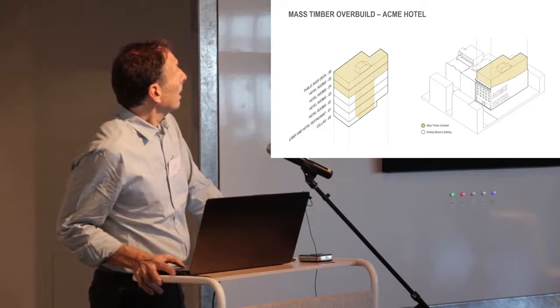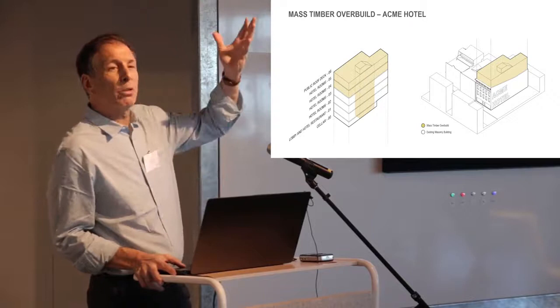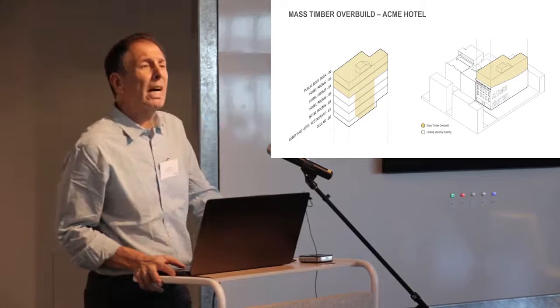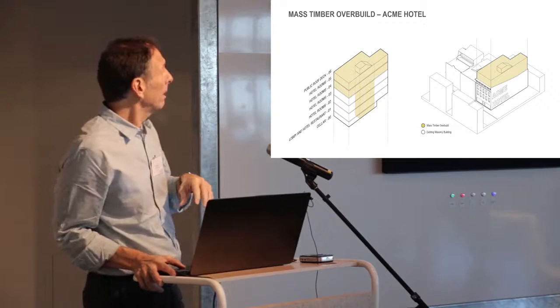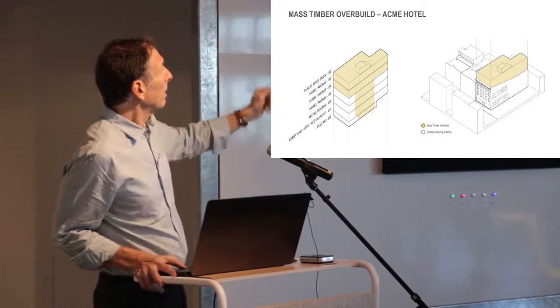Another project, we believe strongly in overbuilds, not demolishing the urban fabric, rather preserve, restore, and then grow timber buildings out of the top of them. So this is a project in New Haven, Connecticut. It's unreinforced masonry, where we're talking about putting two stories on top by bringing a timber stair and elevator core down to a new foundation. But that gives the lateral resistance that it needs to put two floors of timber on top.